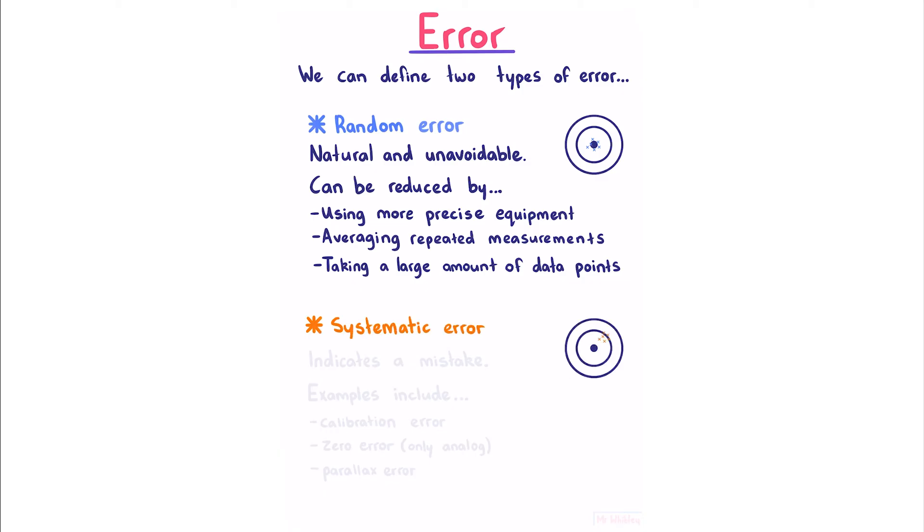Systematic error usually indicates a mistake. Examples include calibration error, where you've set up your equipment incorrectly.